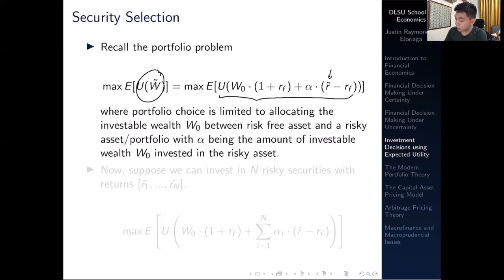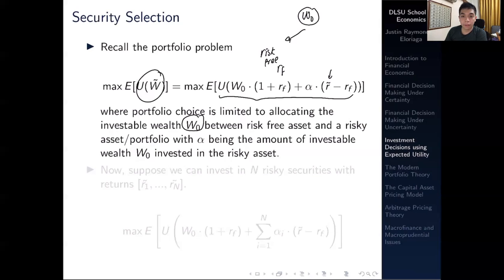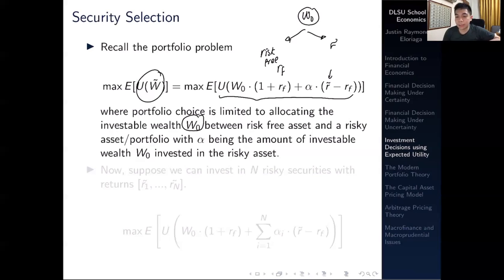Portfolio choice is limited to allocating the investable wealth W naught. You can either put that in a risk-free asset, which pays you a rate of RF, or you could allocate some part of that to a risky prospect, which pays you some R tilde or some uncertain prospect. When you invest in risky assets, it's typically a group — not just one risky asset, but a portfolio of risky assets comprising different securities.